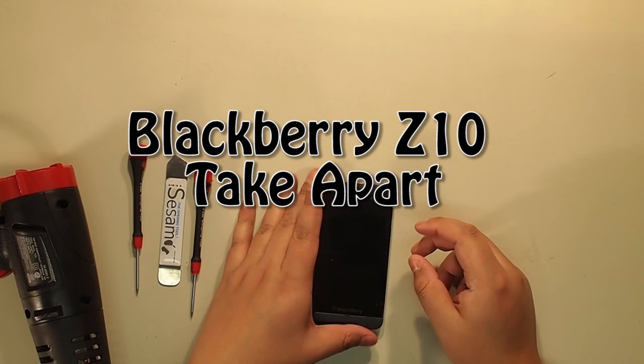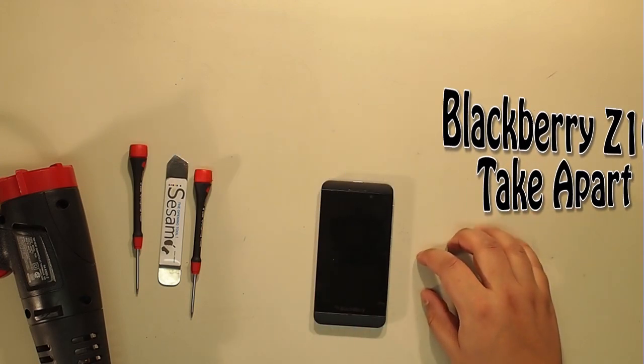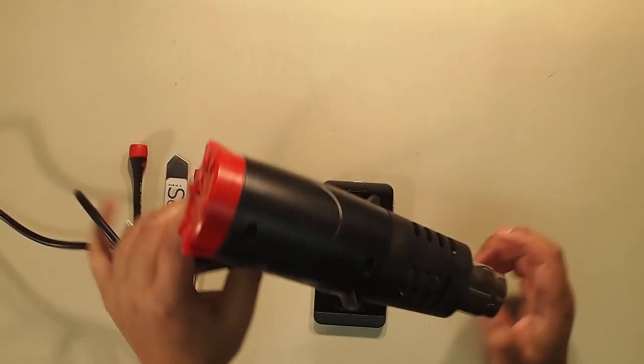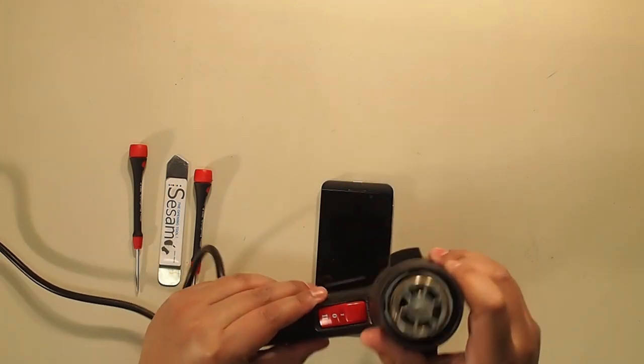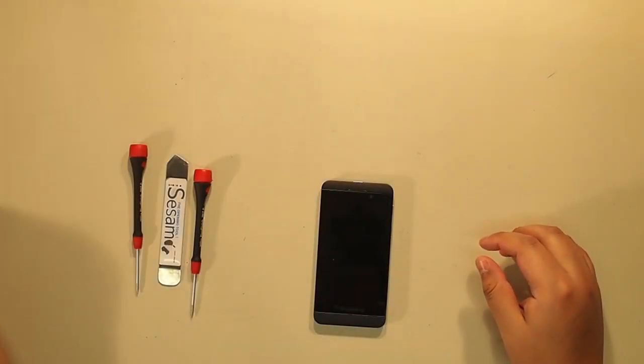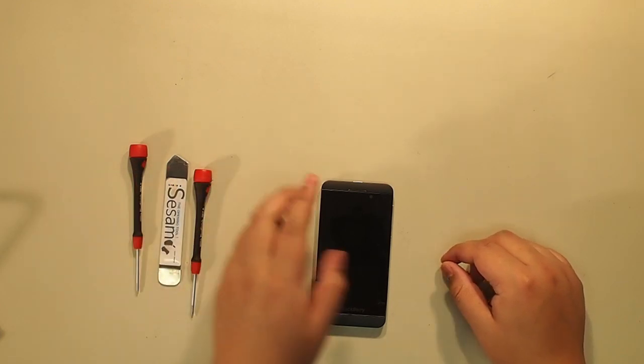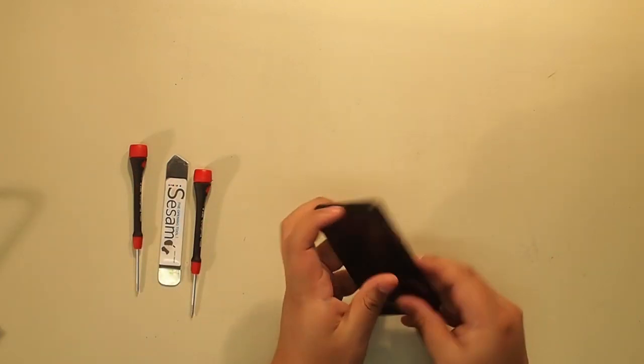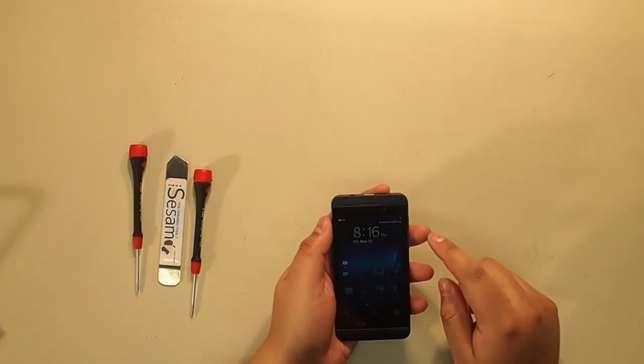Okay, today we're gonna be taking apart the BlackBerry Z10. We're gonna need a few things like a heat gun - you could use a hairdryer or something - but I have this heat gun here. We'll also need a couple screwdrivers, a T4 and a T5, I believe, and a T1, and the opening tool.